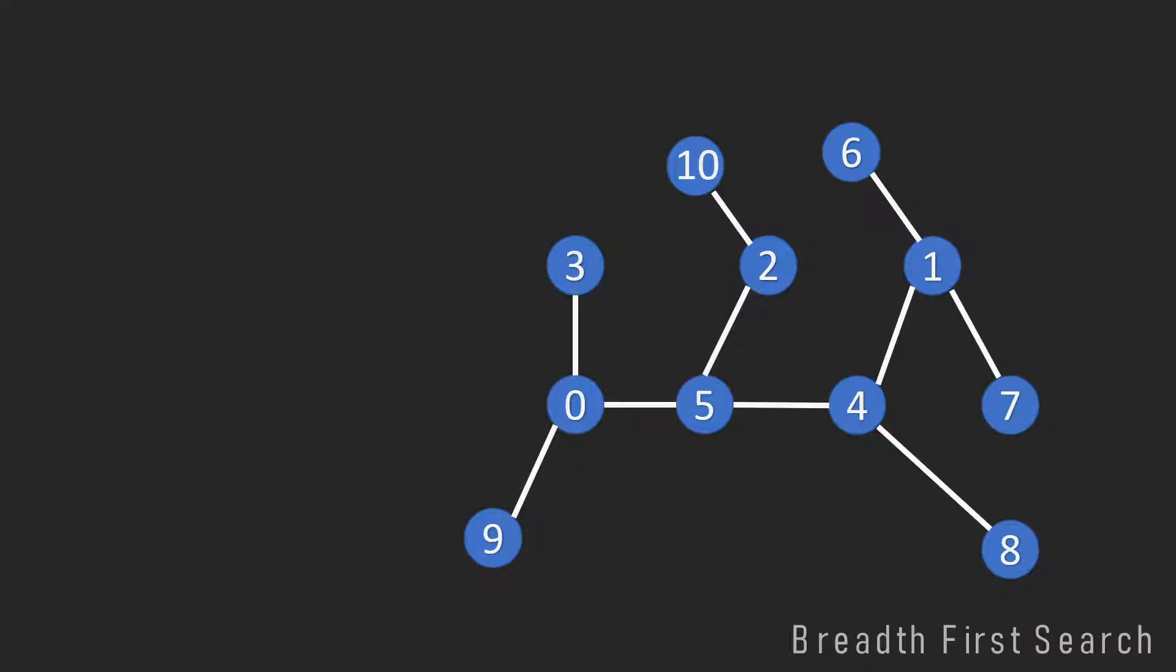So let's have a look at this example. We have this graph consisting of 11 nodes, and we want to start BFS from the node 0. Now the algorithm traverses the graph in the following way.